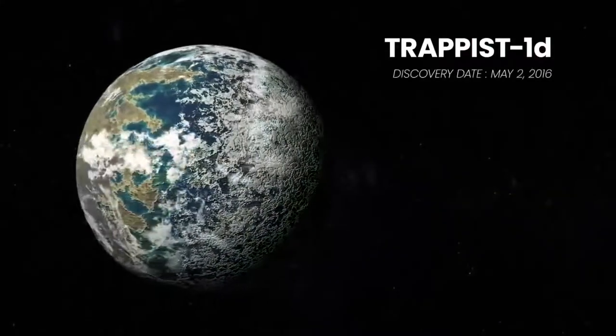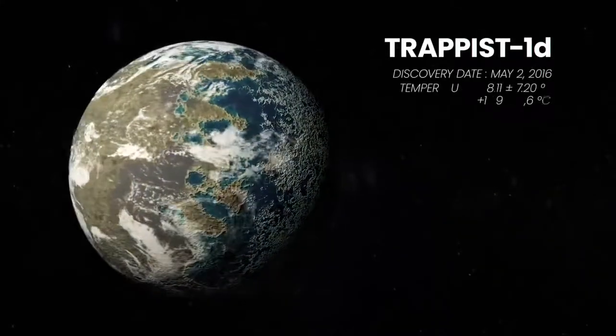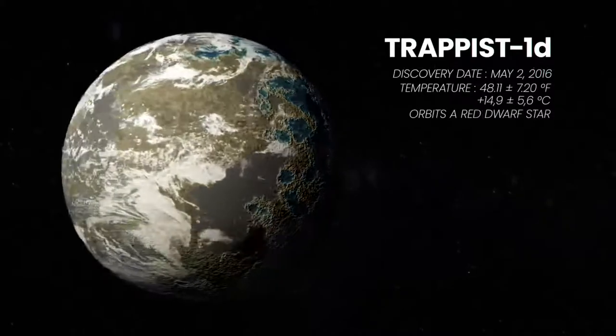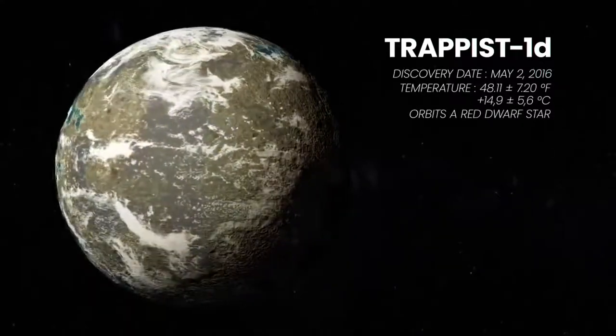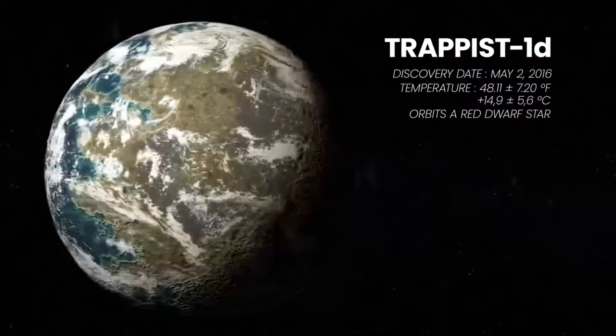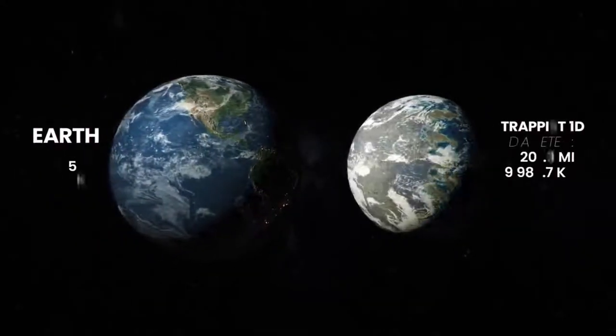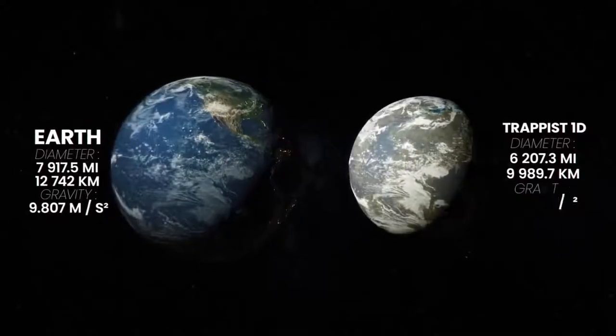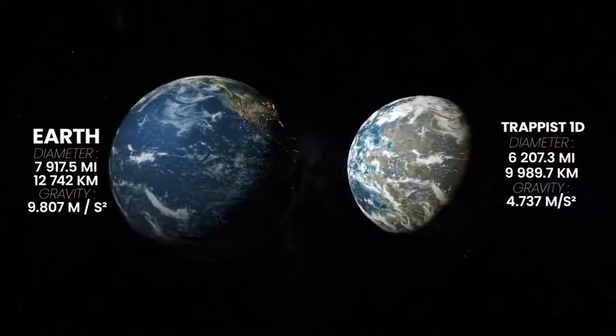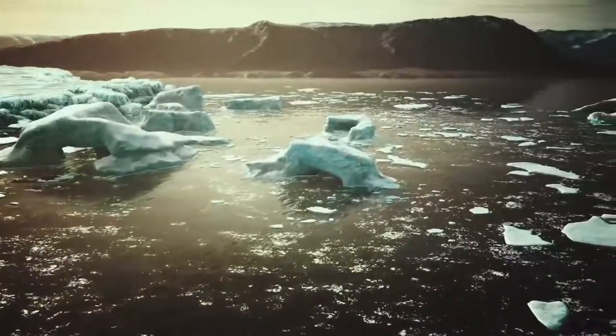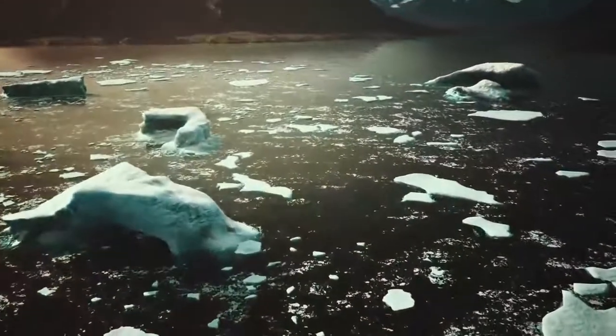Trappist-1d is the least massive planet in the system and likely has a compact hydrogen-poor atmosphere that is similar to Venus, Earth, and Mars. It has half the gravity of our planet, and it gets about 4.3% more sunlight from its star than Earth does, and it lies on the inner edge of the habitable zone. This planet could have oceans or layers of ice. However, a new study shows that this planet could be more like Venus with an uninhabitable atmosphere.